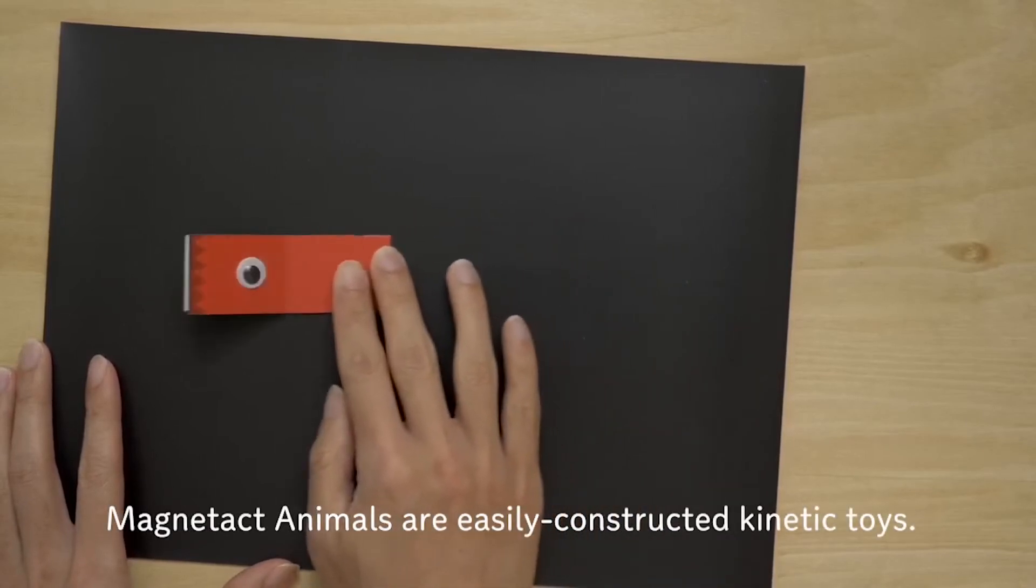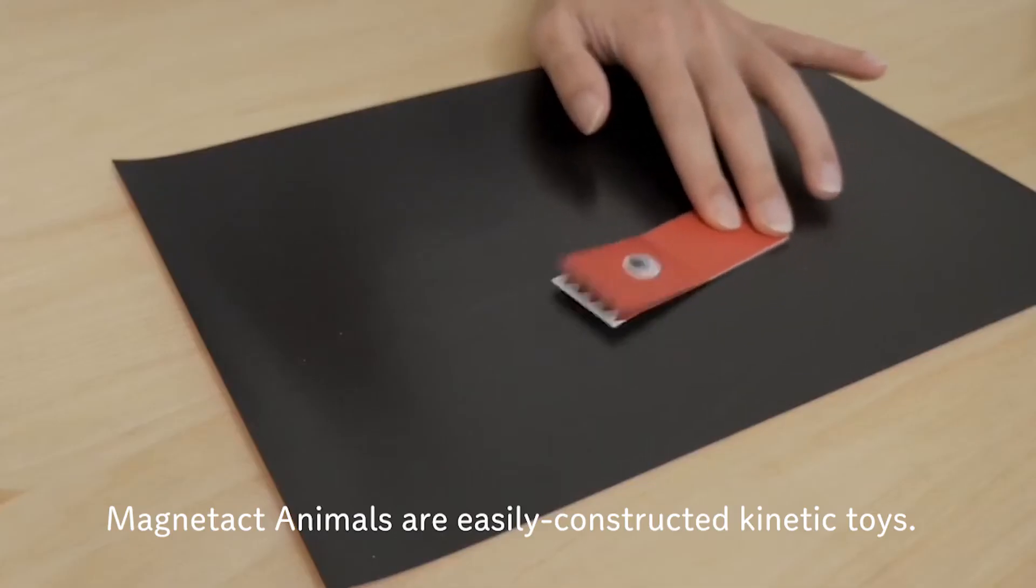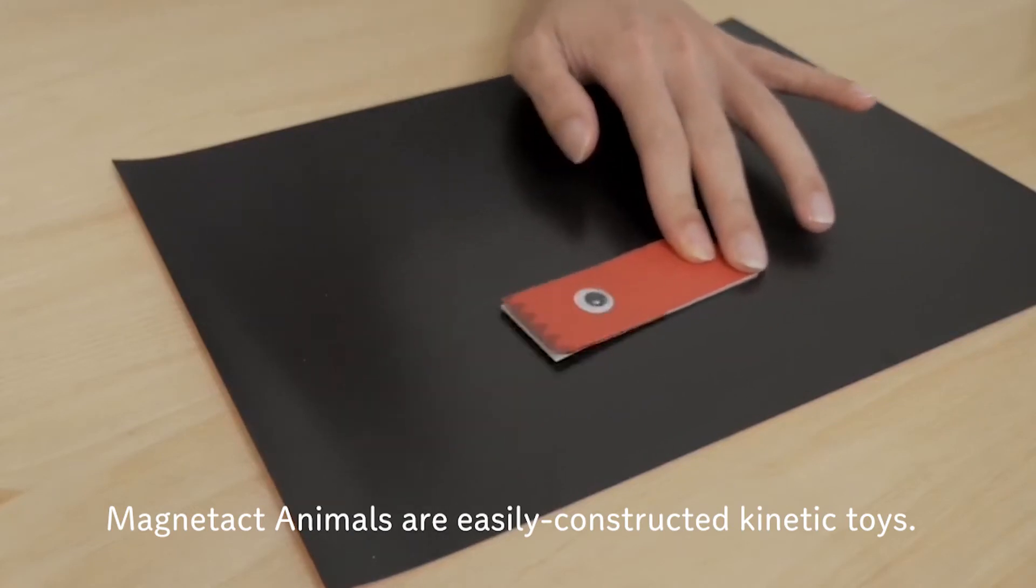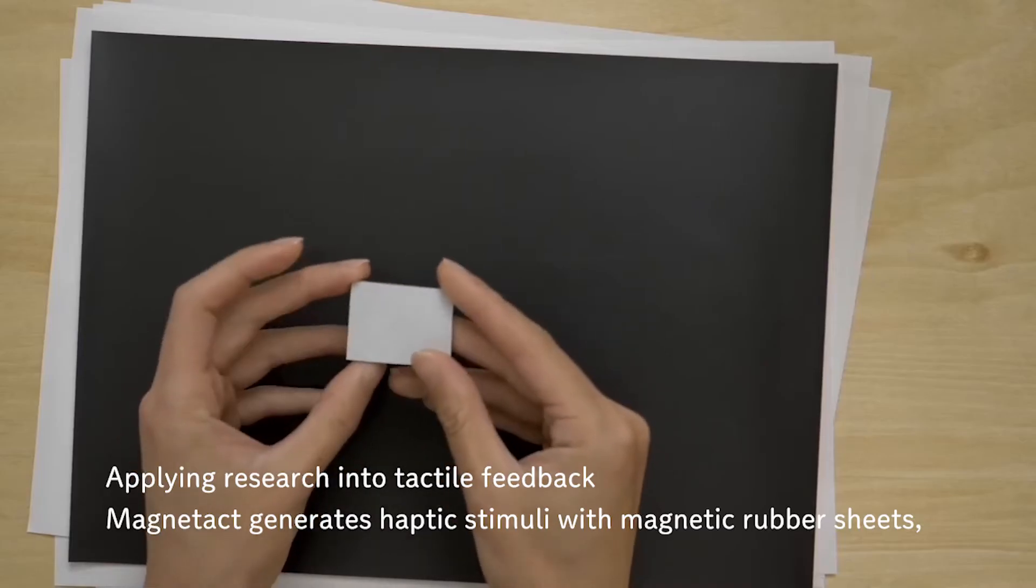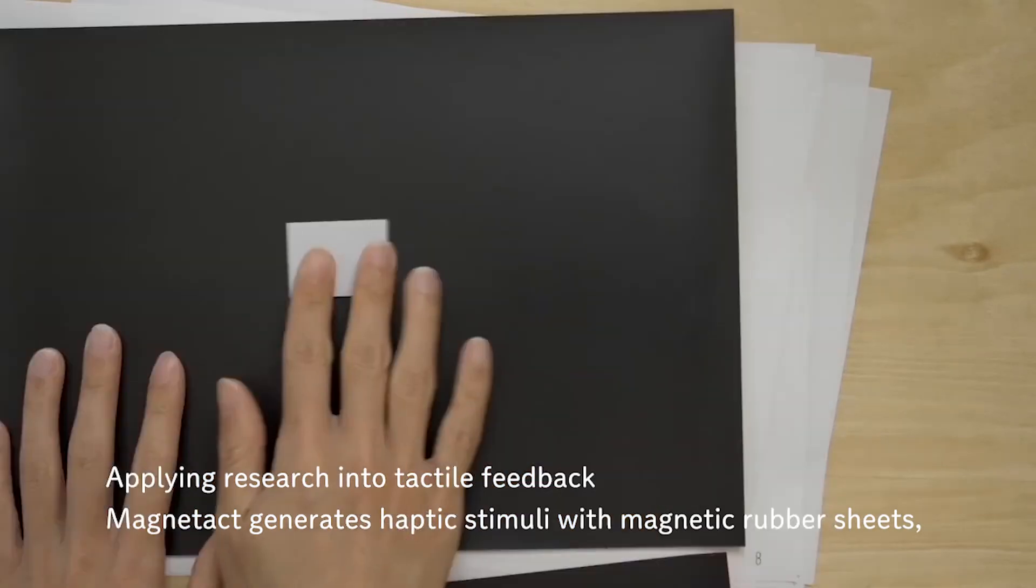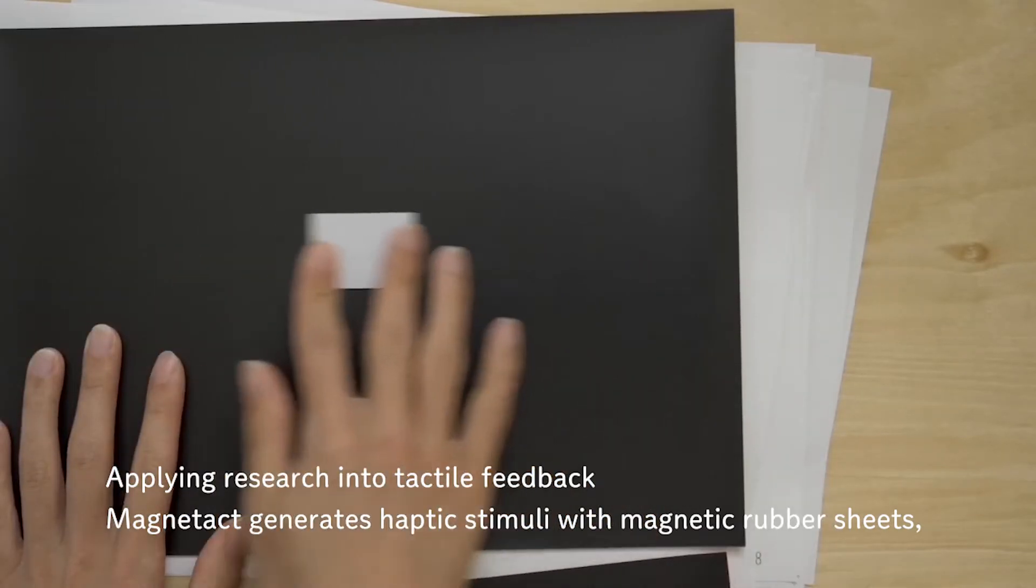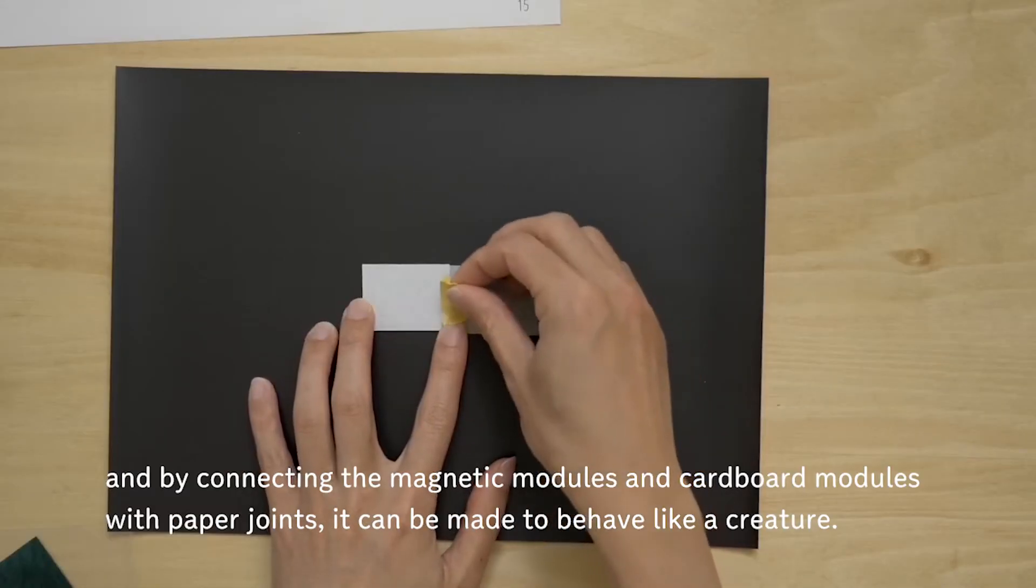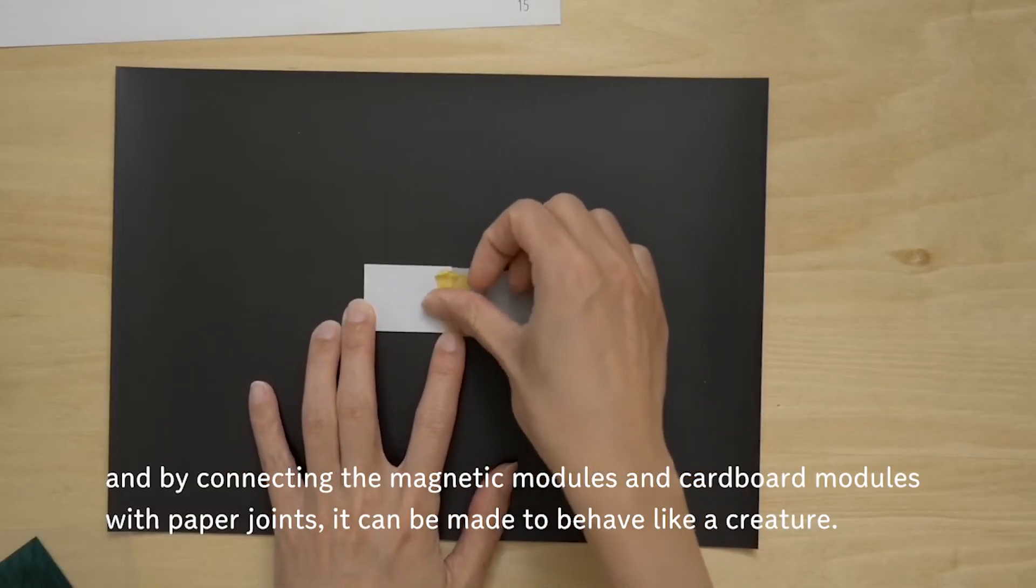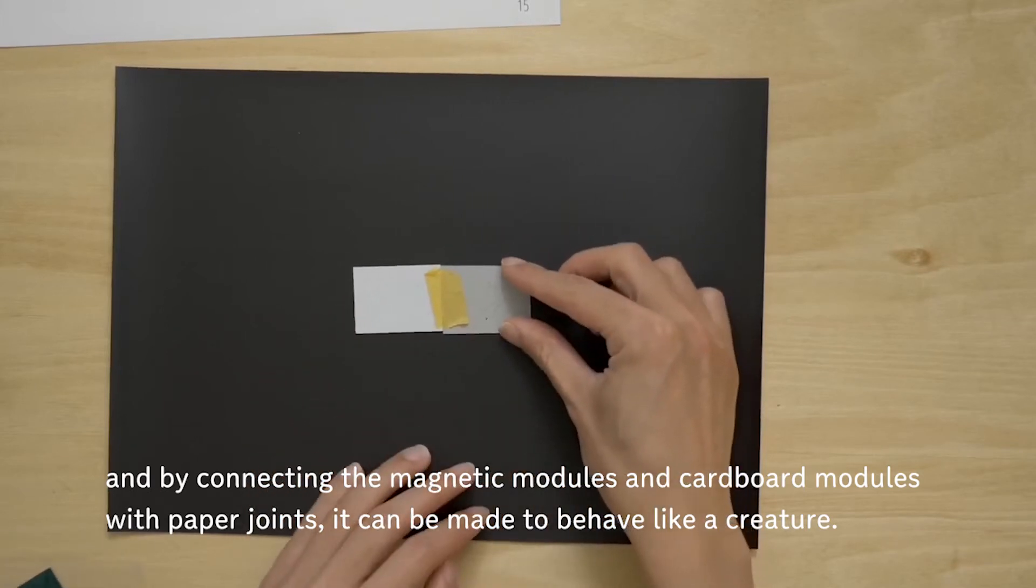Magnetak animals are easily constructed kinetic toys. Applying research into tactile feedback, Magnetak generates haptic stimuli with magnetic rubber sheets. By connecting the magnetic modules and cardboard modules with paper joints, it can be made to behave like a creature.